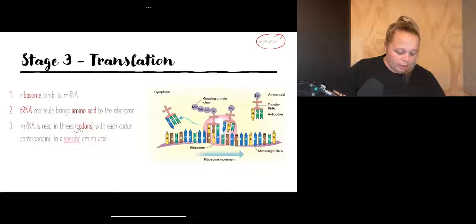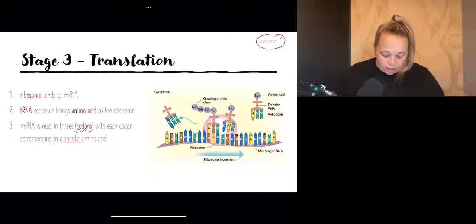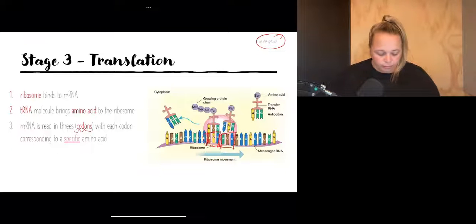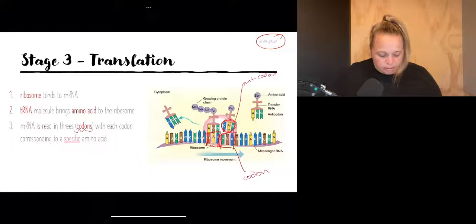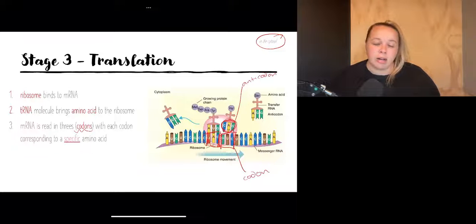So we've got the red in threes that's called a codon. So this here, this UAC, that is a codon. This GUC in the diagram that's another codon. And then on this tRNA that's what we call an anticodon. So that's the anticodon, that's the codon. So it's being read in threes by those tRNA molecules.